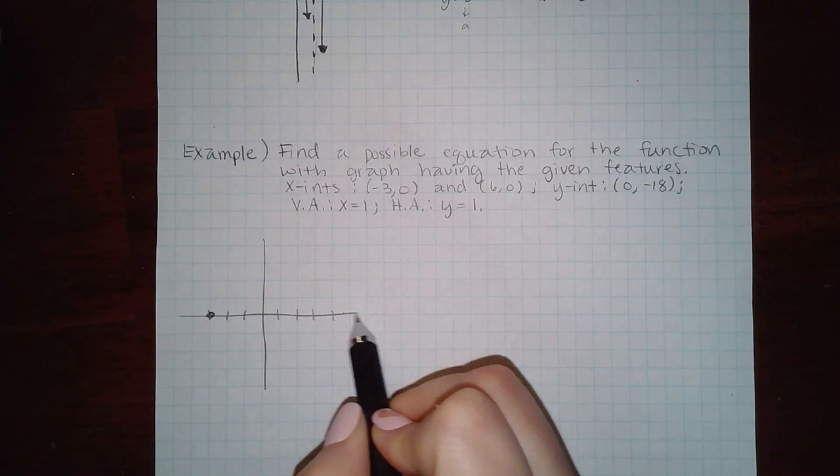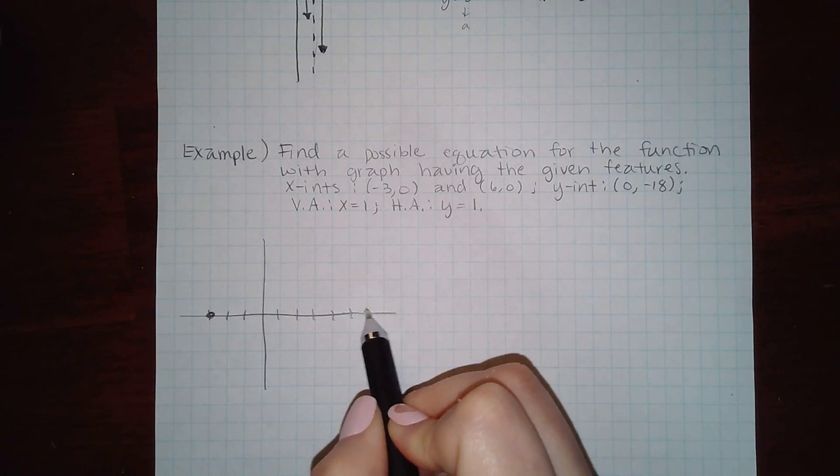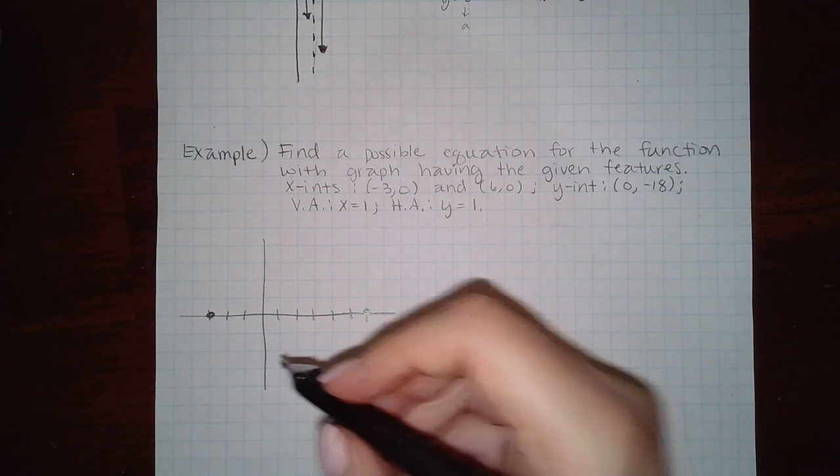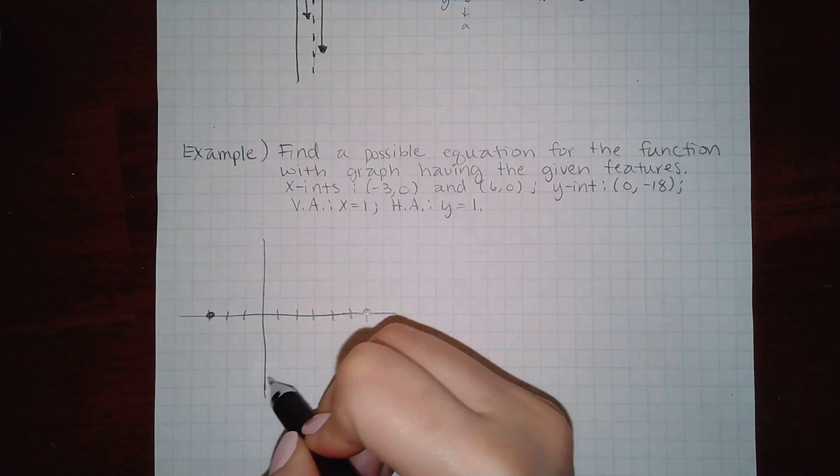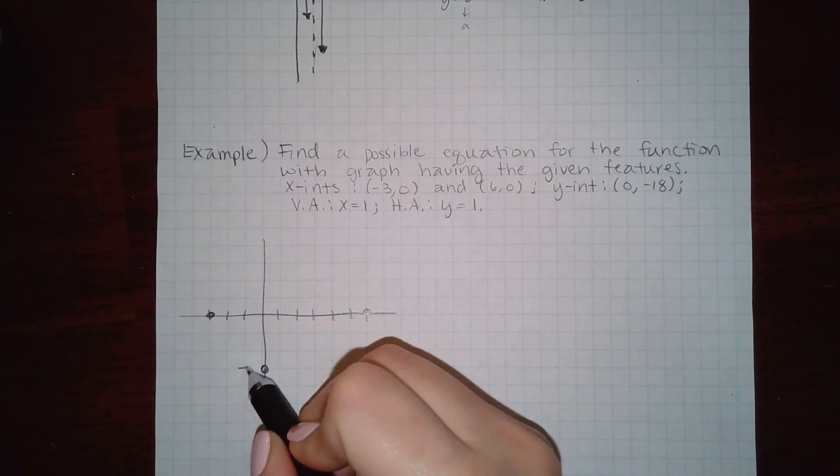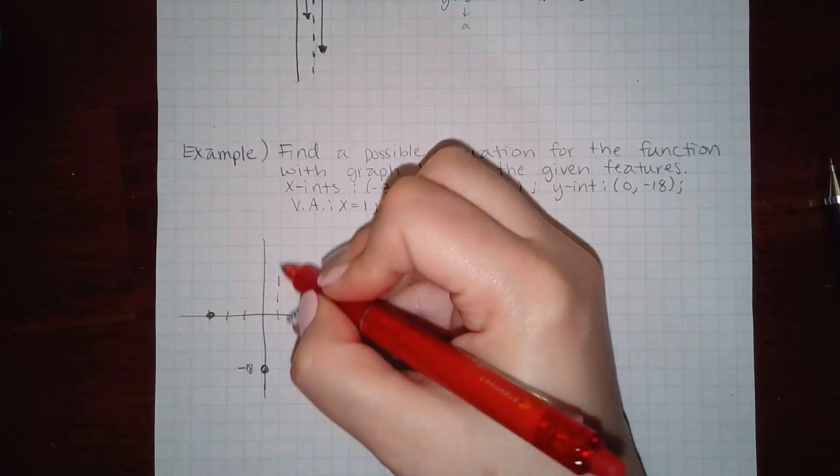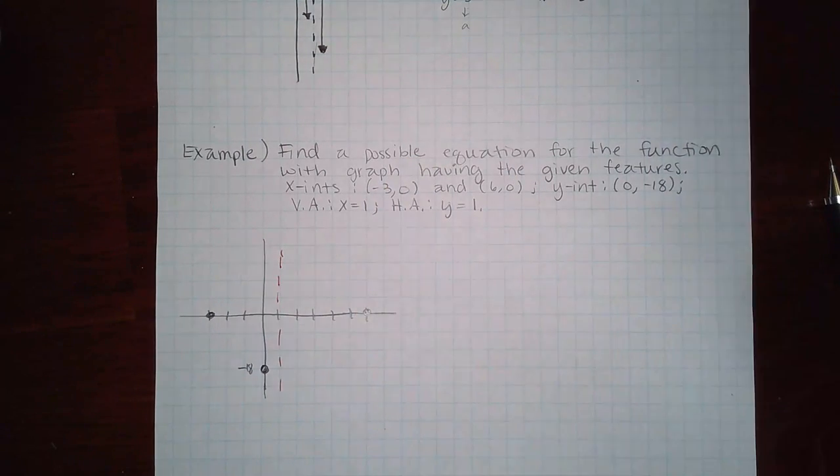It says I have intercepts of negative three, here's an x-intercept, and one two three four five six, there's another x-intercept. It's telling me I have a y-intercept of zero and 18. I'm not going to go all the way down there, I'm just going to say that's negative 18. Then you have a vertical asymptote at one and a horizontal asymptote at one.